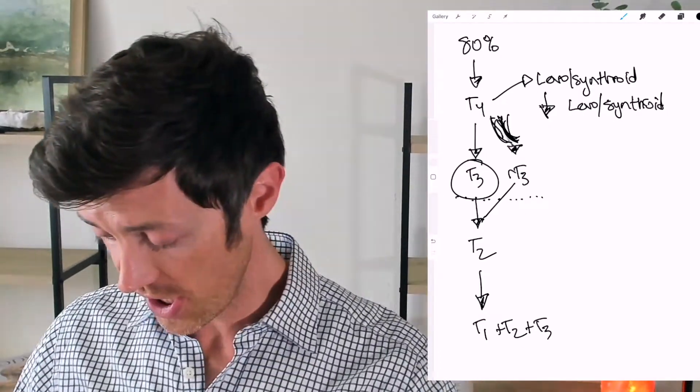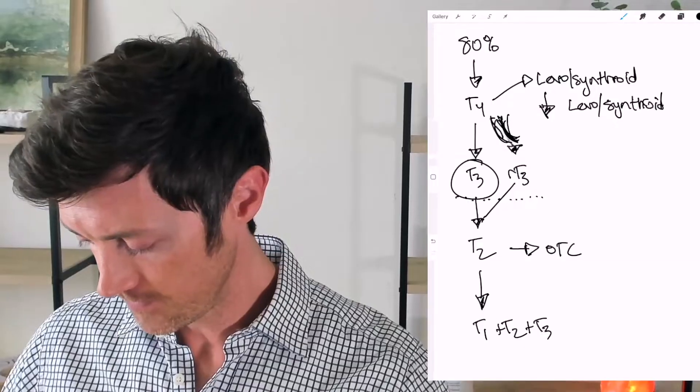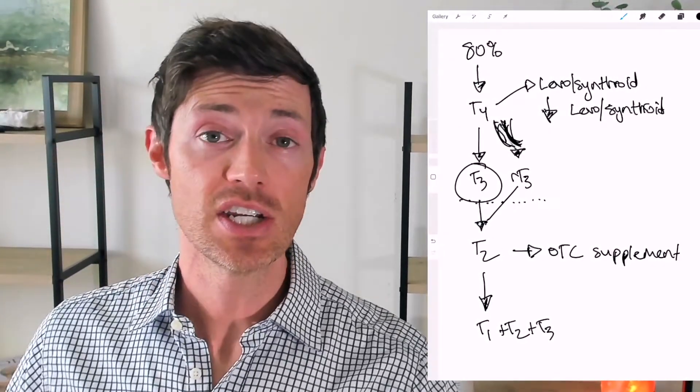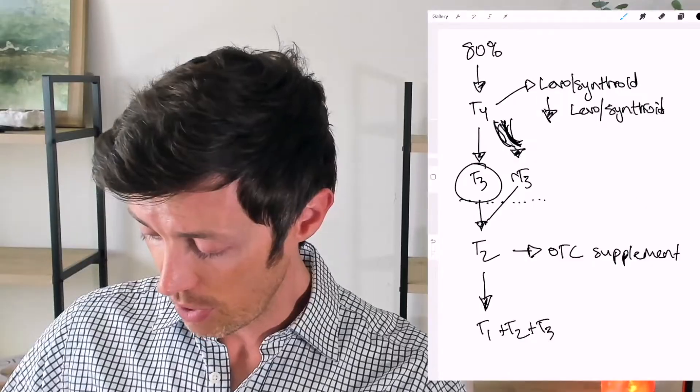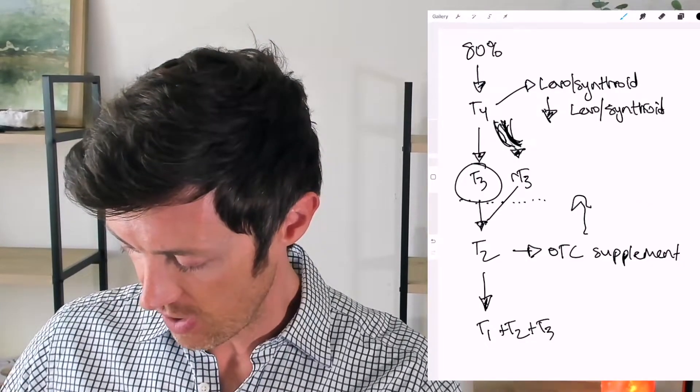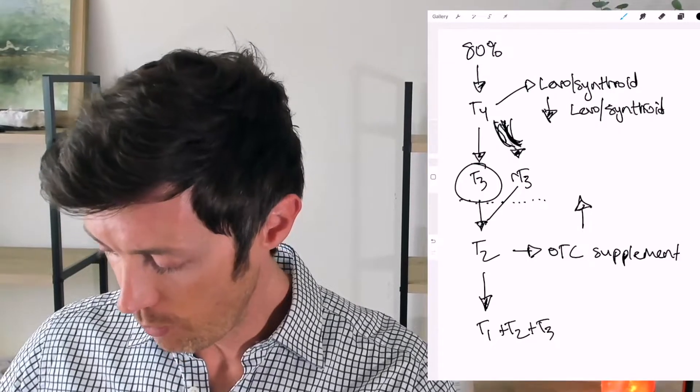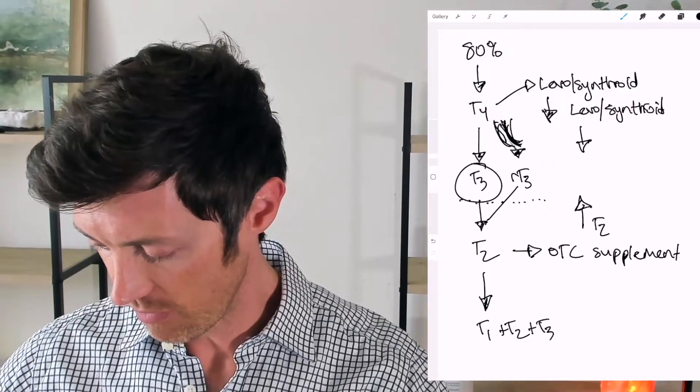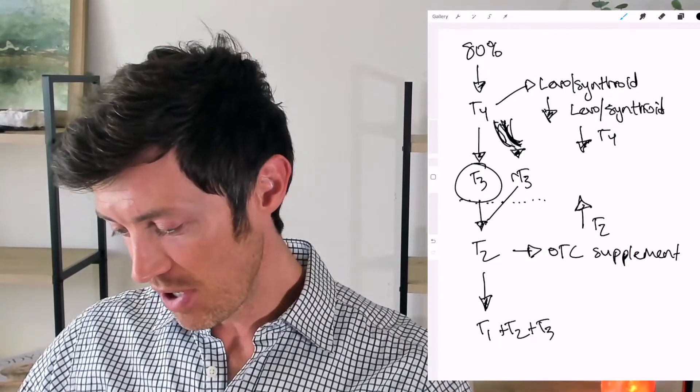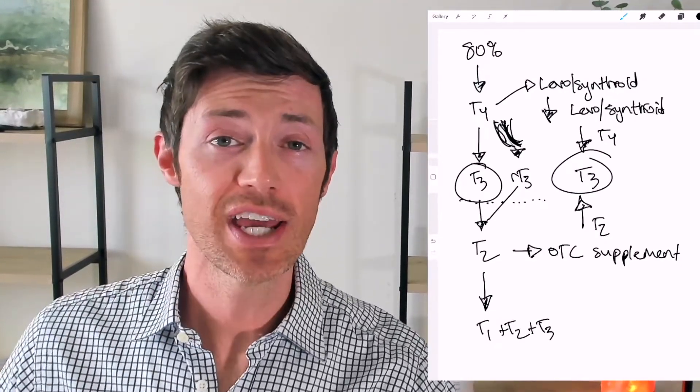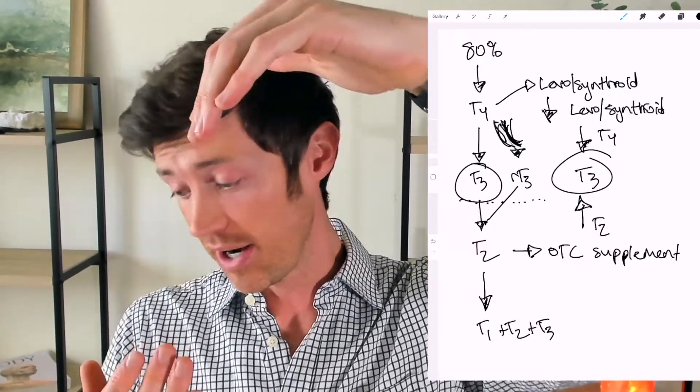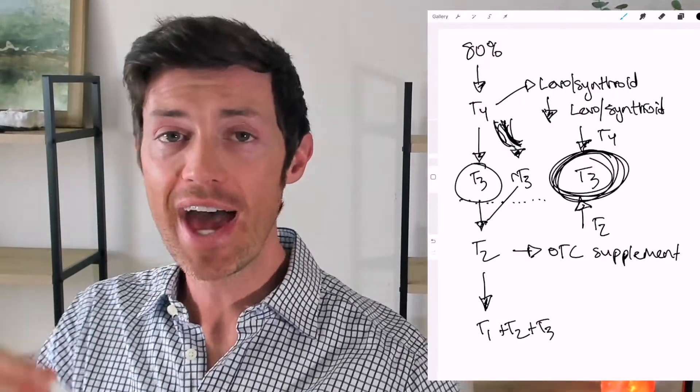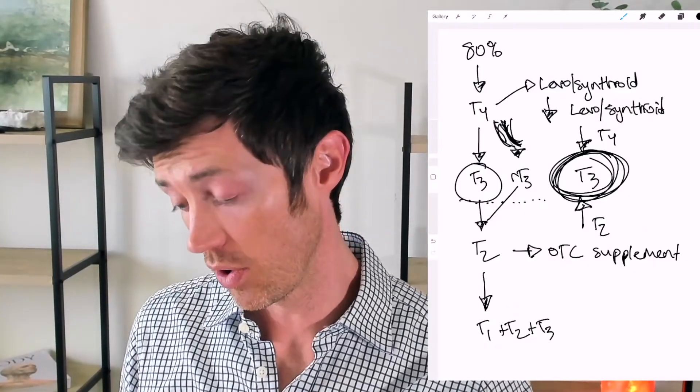But when you take T2, which is available as an over-the-counter supplement, unlike the other thyroid medications, which are only available as prescriptions, T2 you can take as an over-the-counter supplement. And taking T2 puts upward pressure on this system. So you're getting upward pressure from the T2, if you take it, and you're getting downward pressure from the T4. Now, what's in the middle? T3. So when you take T4 from the top and you take T2 from the bottom, you're putting pressure on that system to stabilize T3 levels.